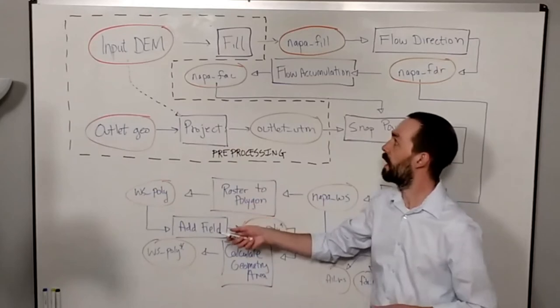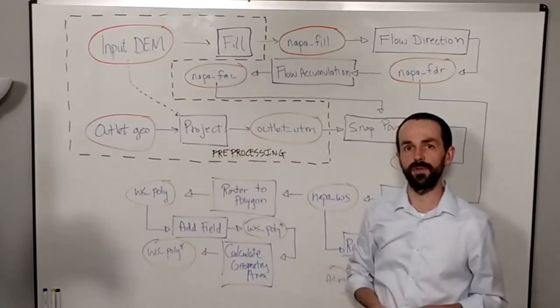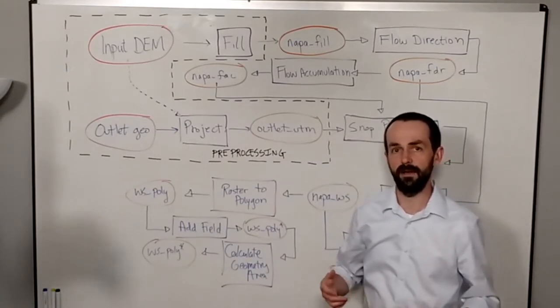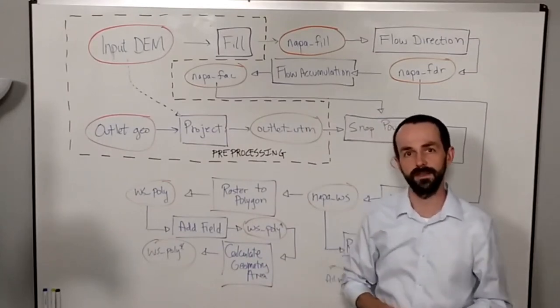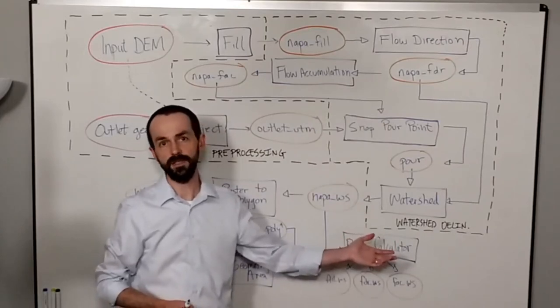we're taking our input layers and either filling voids or projecting them into the correct coordinate system. Then we may actually have the process of delineating our watershed in this example. We may call this the watershed delineation process,